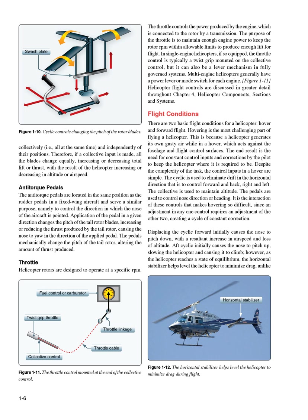Throttle. Helicopter rotors are designed to operate at a specific RPM. The throttle controls the power produced by the engine, which is connected to the rotor by a transmission. The purpose of the throttle is to maintain enough engine power to keep the rotor RPM within allowable limits to produce enough lift for flight. In single-engine helicopters, if so equipped, the throttle control is typically a twist grip mounted on the collective control, but it can also be a lever mechanism in fully governed systems. Multi-engine helicopters generally have a power lever or mode switch for each engine. Helicopter flight controls are discussed in greater detail in Chapter 4, Helicopter Components, Sections, and Systems.